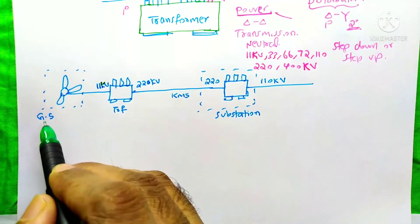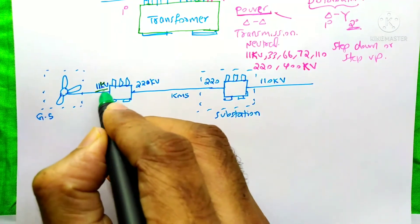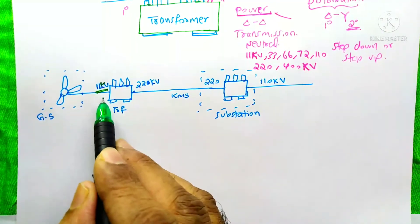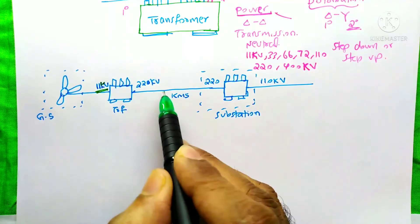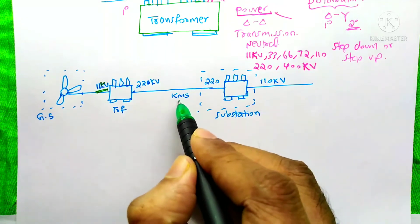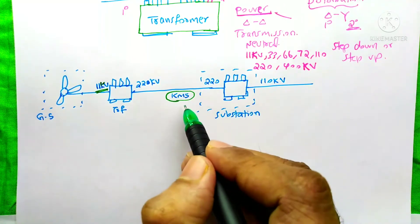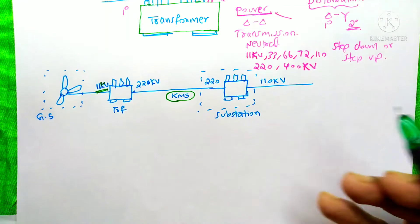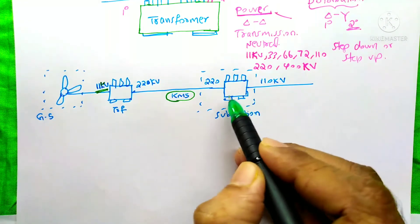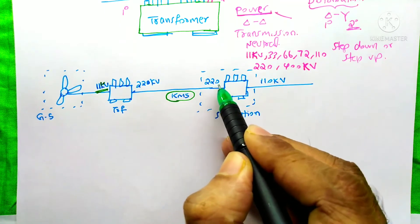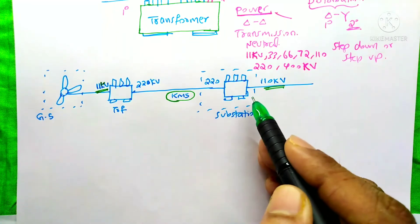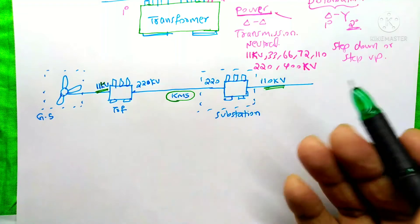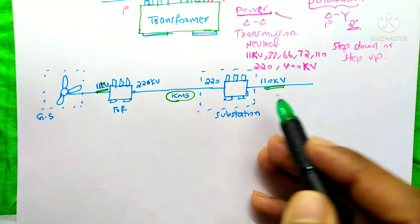Suppose it is a generating station from where we are generating a voltage of 11 kV. This 11 kV is converted to 220 kV — we are stepping up this voltage. After this, the high voltage is transmitted over a long distance, hundreds or thousands of kilometers, until it reaches a substation. At the substation there would be a number of transformers. Another power transformer converts that 220 kV power to 110 kV — so step-up is taking place here and step-down taking place there.